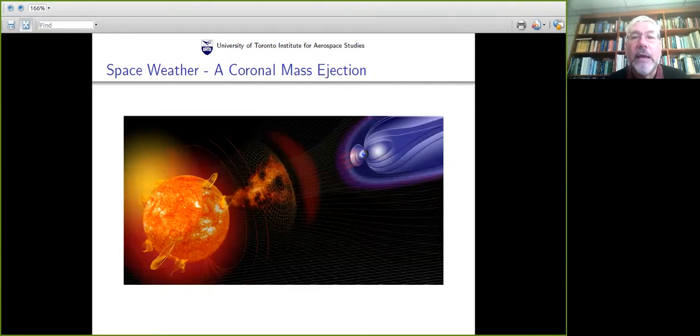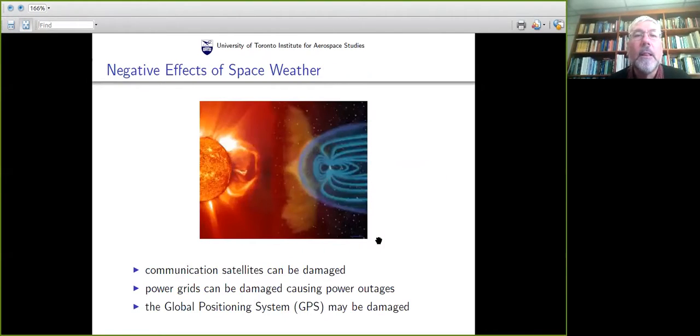Here you have an example of what we call a coronal mass ejection. When these things happen, the solar wind ends up having many more particles than it normally would. These CMEs, these coronal mass ejections, can have a very bad effect on the Earth. Communication satellites can be damaged. Power grids on Earth can be damaged, causing power outages. And the global positioning system of satellites may also be damaged, which affects everything.